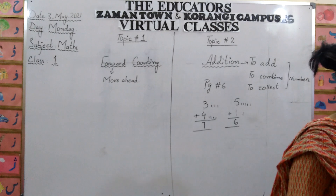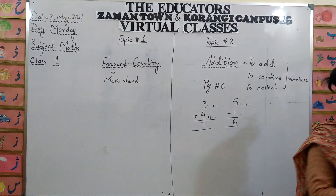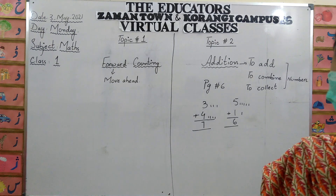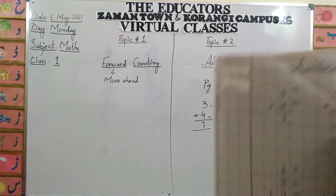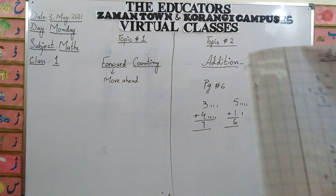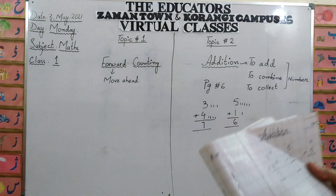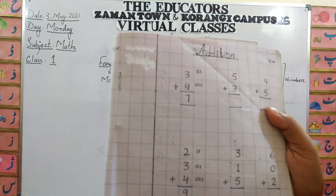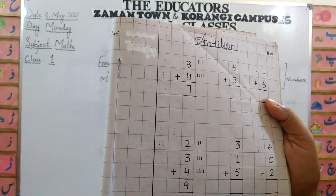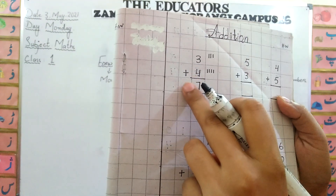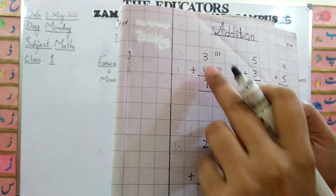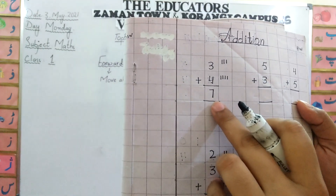Now there is copy work. First, you will do forward counting in your copy. Then you will do addition. For example: three plus four — draw three lines, then four lines, and the answer is seven.